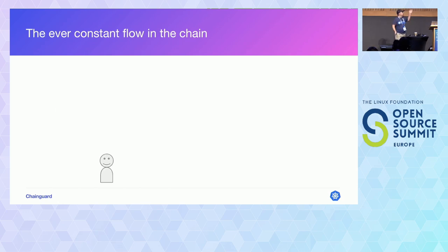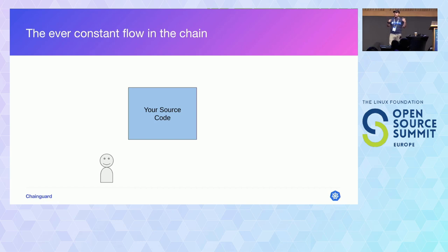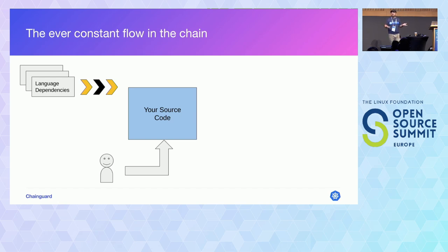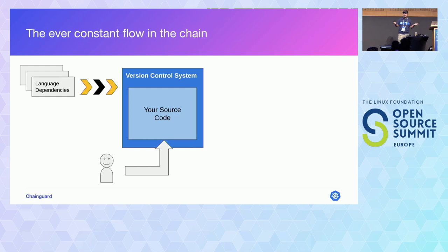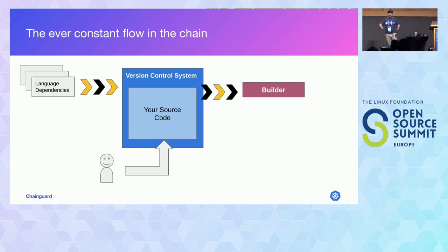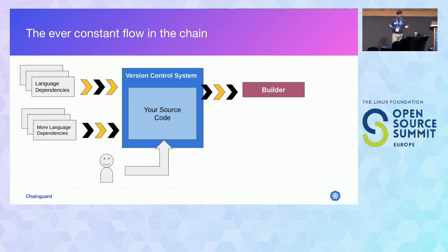Here's a simplified view of the software development loop. A developer pushes changes to a codebase that need to go out to the world. They pull dependencies from their language or third-party libraries, host code in a version control system — most likely Git — and use a builder to release the project. Builders can range from a simple Makefile all the way to a sophisticated release process like Kubernetes. Builders are also code that gets executed arbitrarily whenever you build or release software, introducing another set of dependencies.